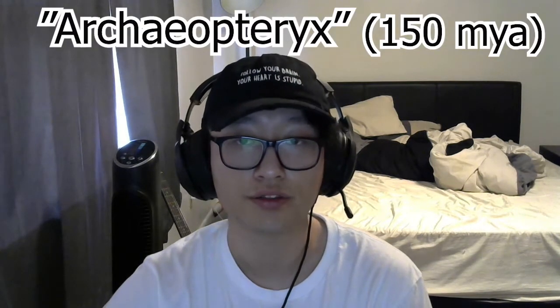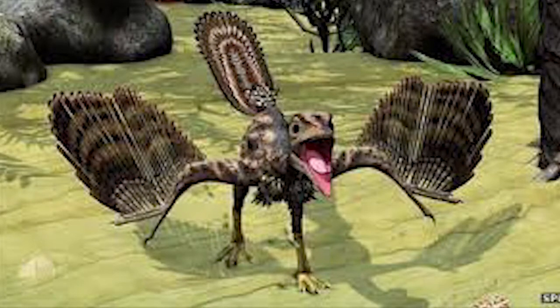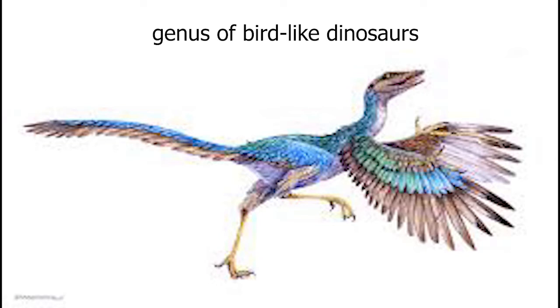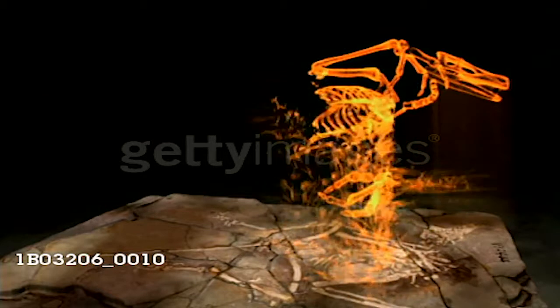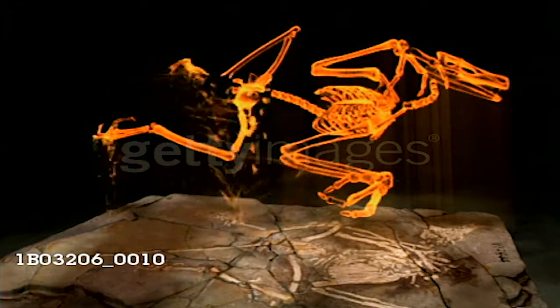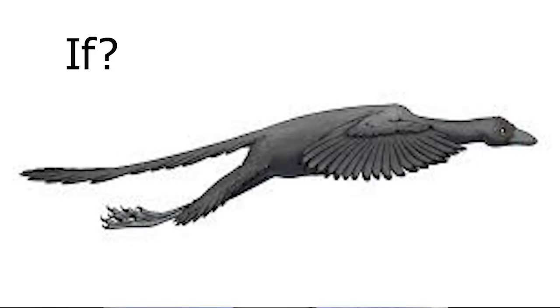For more than a century, the small theropod dinosaur Archaeopteryx from the late Jurassic period was considered to have been the earliest bird. Archaeopteryx is a genus of bird-like dinosaurs that is transitional between non-avian feathered dinosaurs and modern birds. The fossil record shows it was roughly the size of a raven, with broad wings that were rounded at the ends and a long tail compared to its body length. What makes Archaeopteryx different from earlier Paraves is that it could likely fly, but if and how exactly it flew remains a mystery.